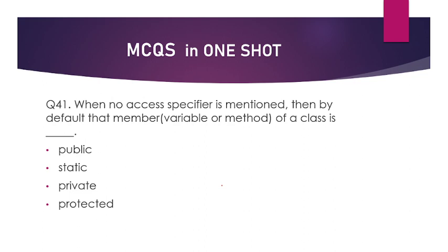When no access specifier is mentioned, then by default that member variable or method of a class is public, private, static, or protected? Option number A is the right answer — that is public.